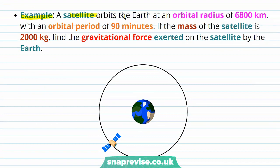A satellite orbits the Earth at an orbital radius of 6,800 kilometres with an orbital period of 90 minutes. If the mass of the satellite is 2,000 kilograms, find the gravitational force exerted on the satellite by the Earth.